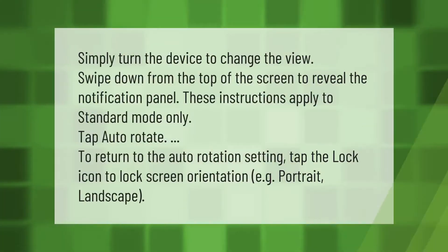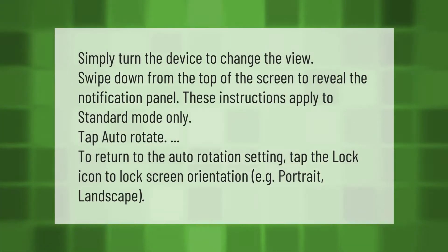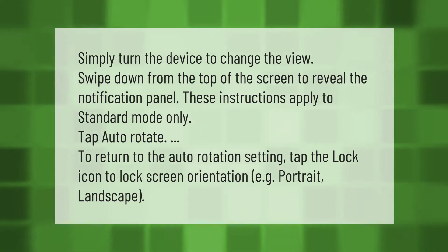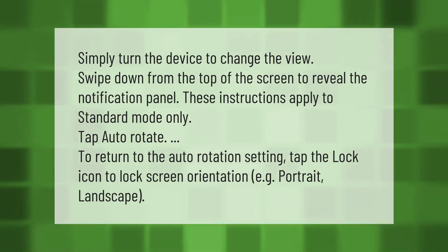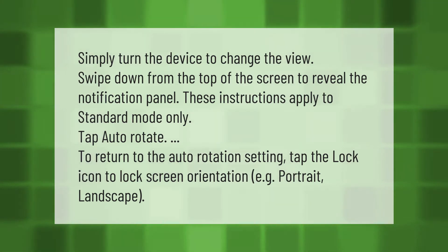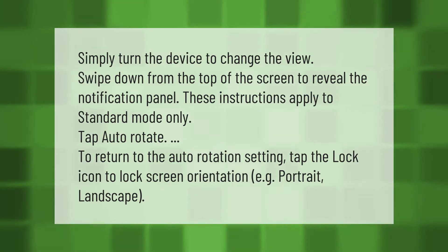Simply turn the device to change the view. Swipe down from the top of the screen to reveal the notification panel. These instructions apply to standard mode only. Tap auto rotate to return to the auto rotation setting, or tap the lock icon to lock screen orientation, for example portrait or landscape.